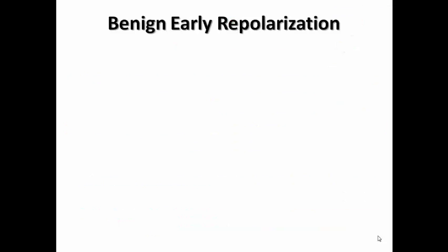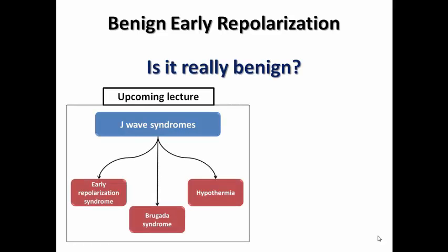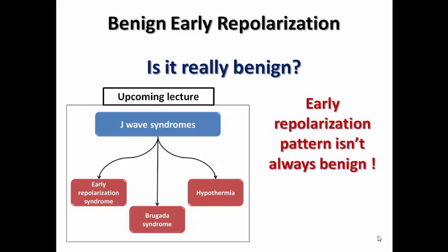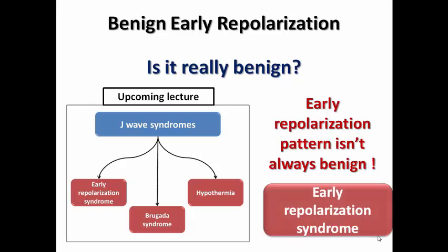Regarding the term 'benign early repolarization pattern' — is it really benign? Unfortunately, early repolarization pattern is not always benign. It may be malignant and may lead to sudden cardiac death in some cases. That's why we use the term early repolarization syndrome. I prefer to use the term 'early repolarization pattern' throughout the lecture because what you see on the ECG is just early repolarization pattern. Whether it is a syndrome, benign, or malignant cannot be decided from the ECG alone — it is decided by history taking, and we will address this in the upcoming lecture on J-wave syndromes.